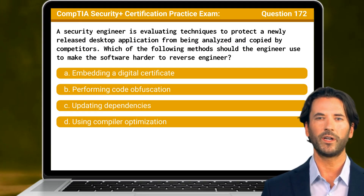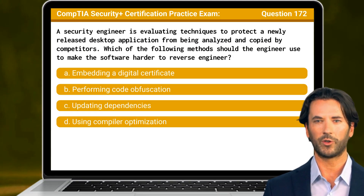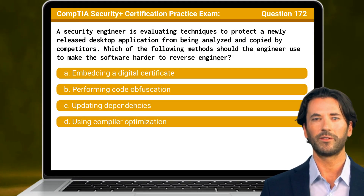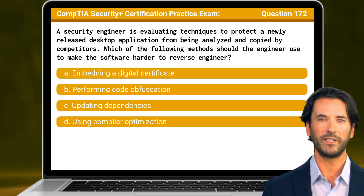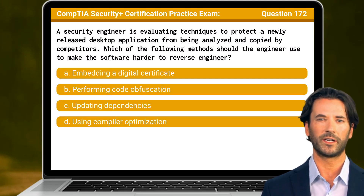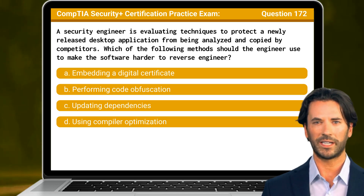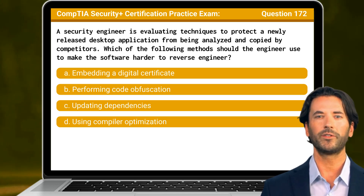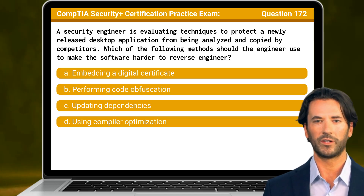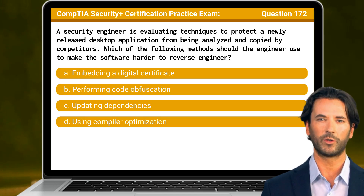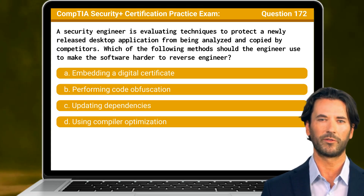Question 172. A security engineer is evaluating techniques to protect a newly released desktop application from being analyzed and copied by competitors. Which of the following methods should the engineer use to make the software harder to reverse engineer?